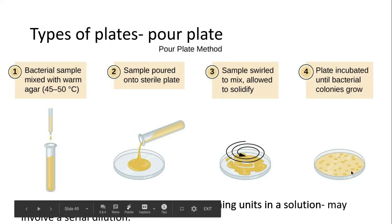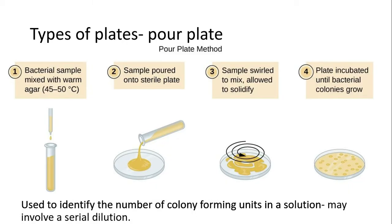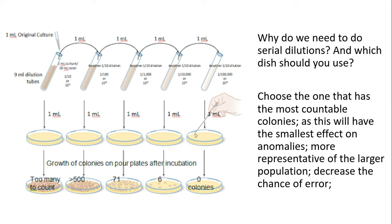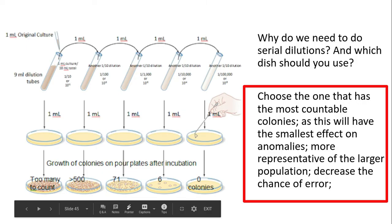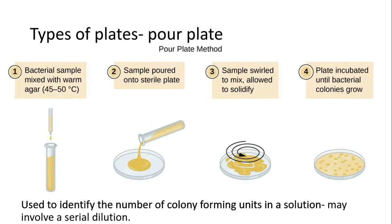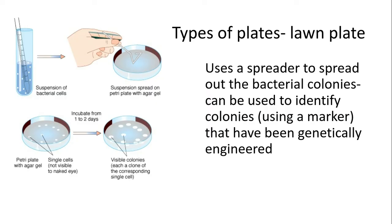We use pour plates to identify the number of colony forming units within a solution, and this may involve serial dilution. If we just go back to this one, you can see each one of these would be a different pour plate using these different solutions. That's an example of why we'd use pour plates.